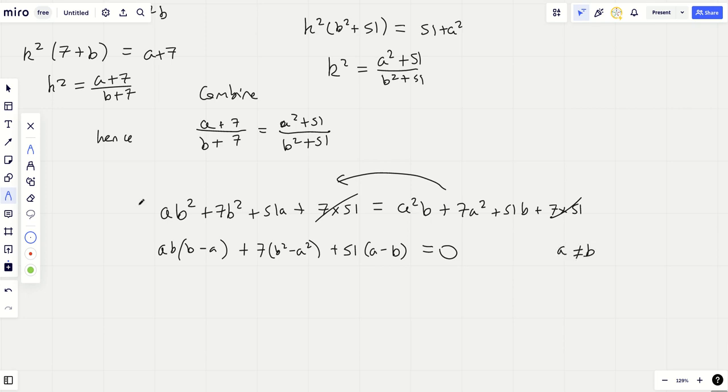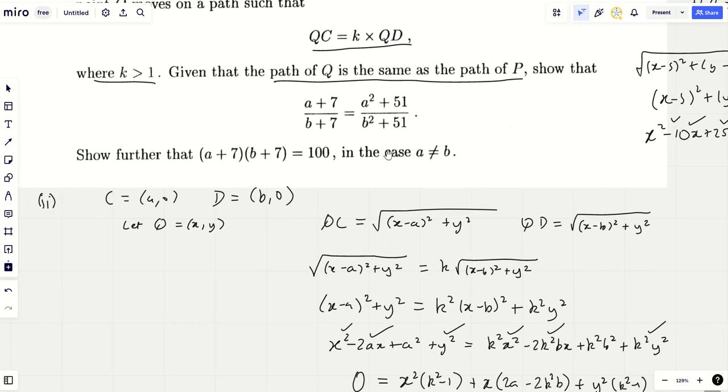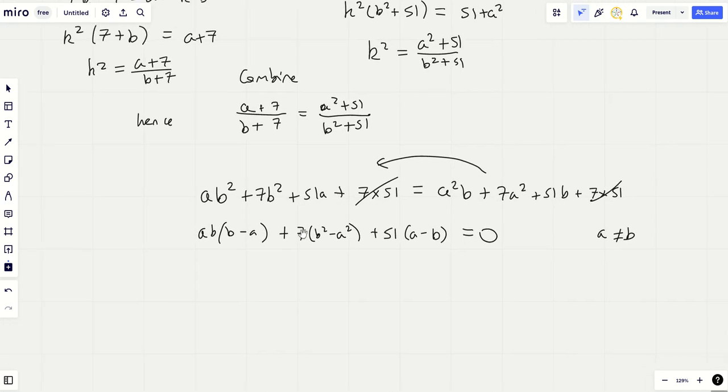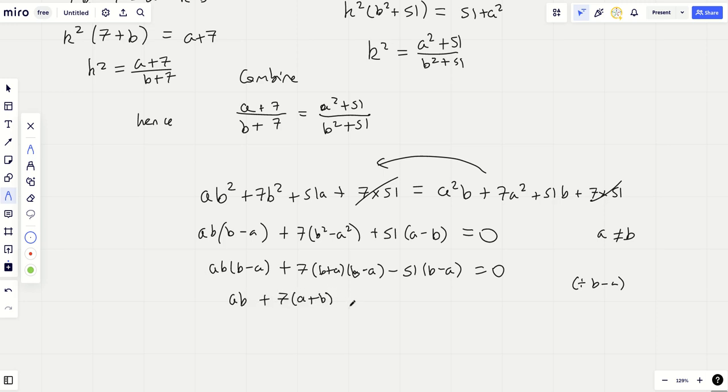I'm pretty sure that's what we had up here. So at the end we can just say, as k² is this and k² is that, we can combine and just say hence (a+7)/(b+7) equals (a²+51)/(b²+51). We're almost at the end now. Show further that this is the case. They haven't given us any extra information, we've just got to rearrange this. Cross multiply. ab²+7b²+51a+7 times 51.